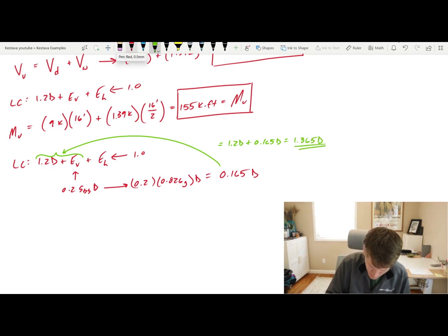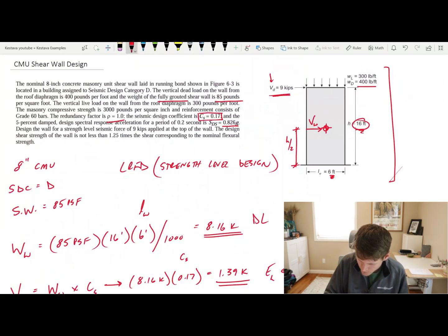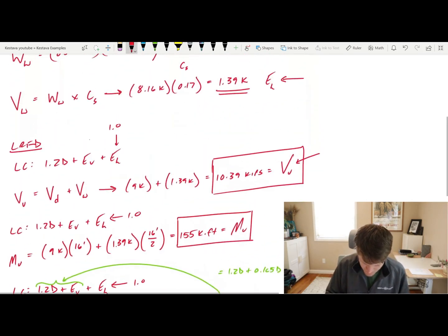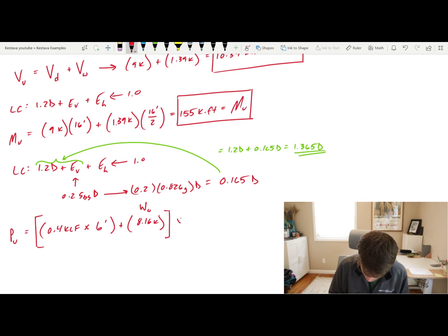So with that said, PU is equal to, let's check out our dead load. 400 pounds per foot, we'll keep that in kips. So that'll be 0.4 KLF. 0.4 KLF times a length of six feet of wall, plus the weight of our wall, which we've already calculated, 8.16 kips. And we're going to take all of that, because that's the total dead load. And we're going to multiply it by our load case factor of 1.365. And that spits out 14.42 kips equal to PU. All right, cool. We got all our demands.